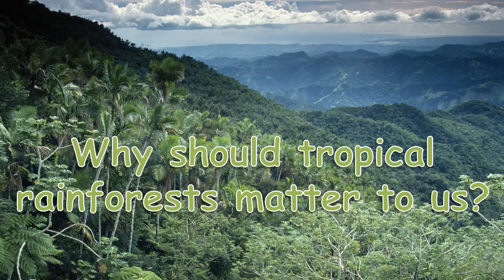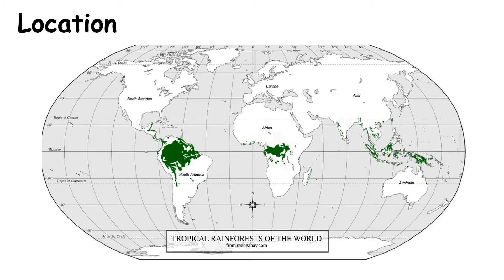The tropical rainforests of the world are hot, wet and lush forests found between the Tropic of Cancer and the Tropic of Capricorn. If we have a look at this map, here is the mighty Amazon rainforest in South America and here is the Congo rainforest in Central Africa. Both of them are found along the equator, so another word for them is equatorial.